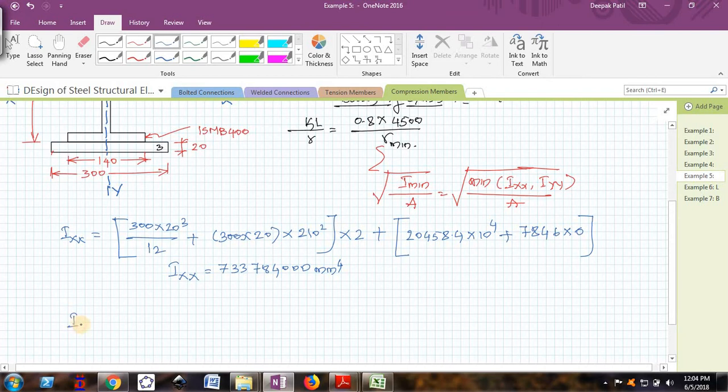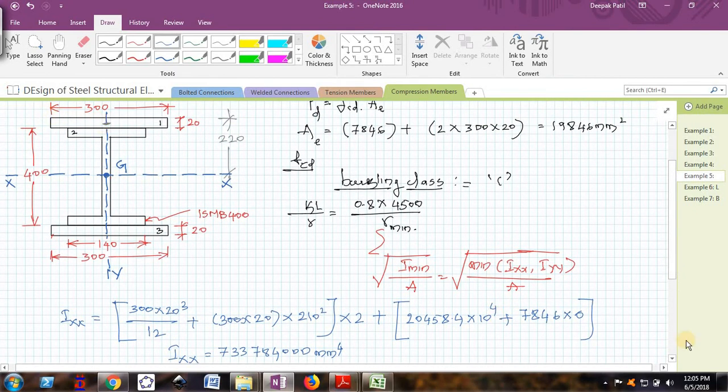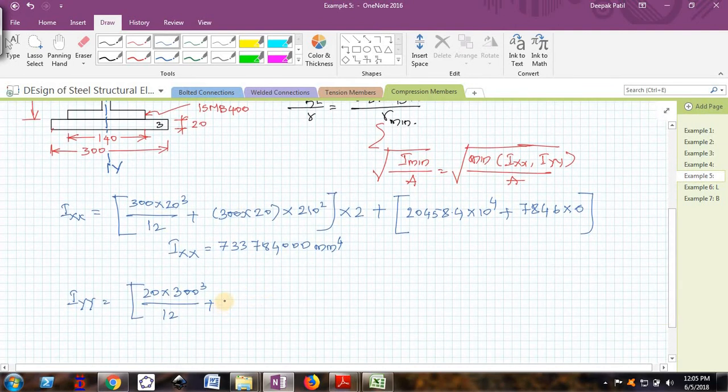Similarly, I will find I_yy. I will take plate first. For the plate, b will be 20 because 20 is the dimension which will be parallel to y-y axis. 20 × 300³ divided by 12. Now you can see here the CG of the plate lies on y-y axis itself, so there is no distance between the CG of the plate and y-y axis. That d² term will be 0. If that term becomes 0, this term will also be 0. This I am multiplying by 2 because 2 plates are there. I_yy of I section is 622.1 × 10⁴ plus. Here also the CG of I section lies on y-y axis itself, so there is no term.